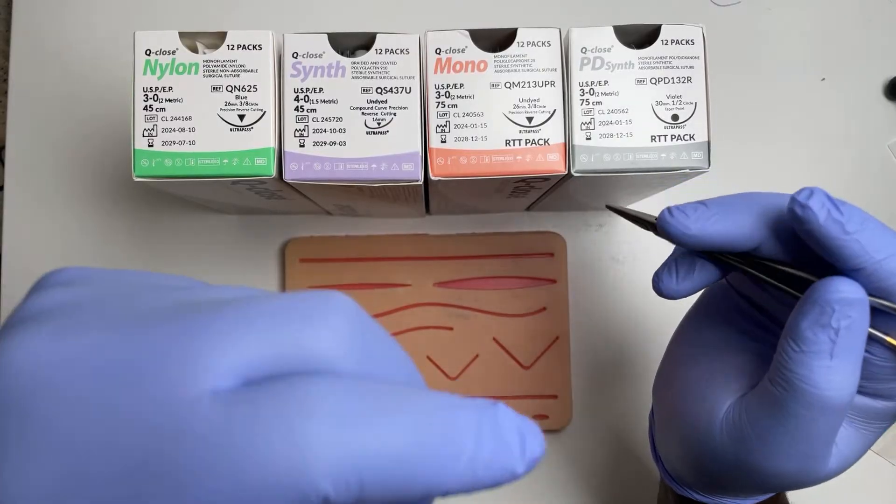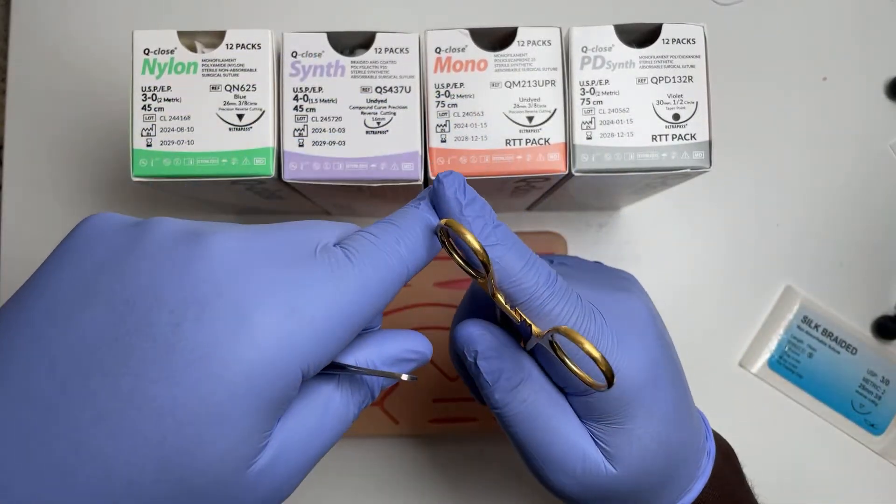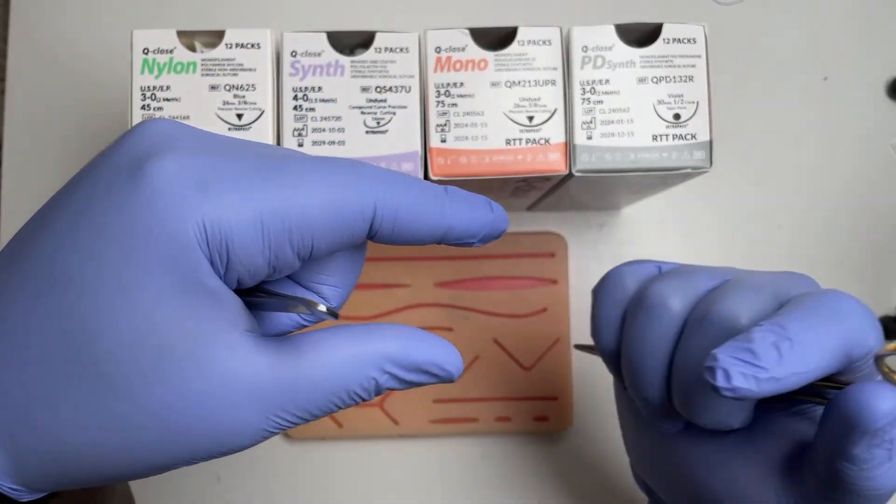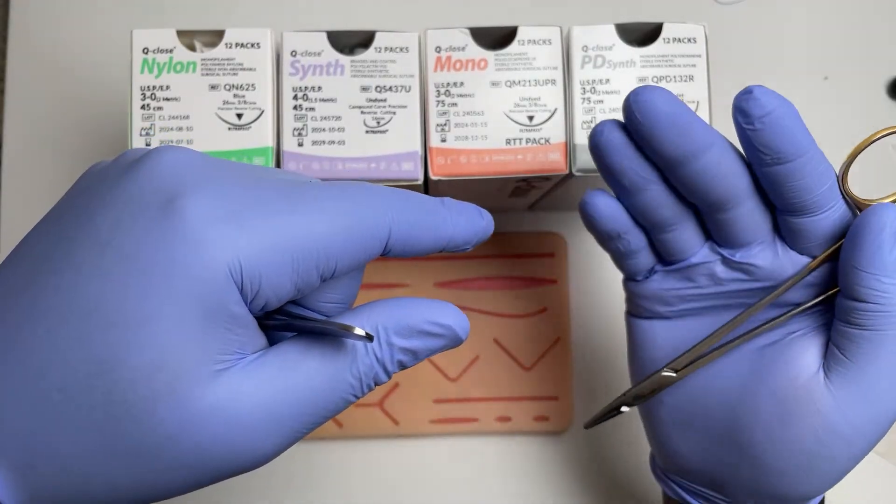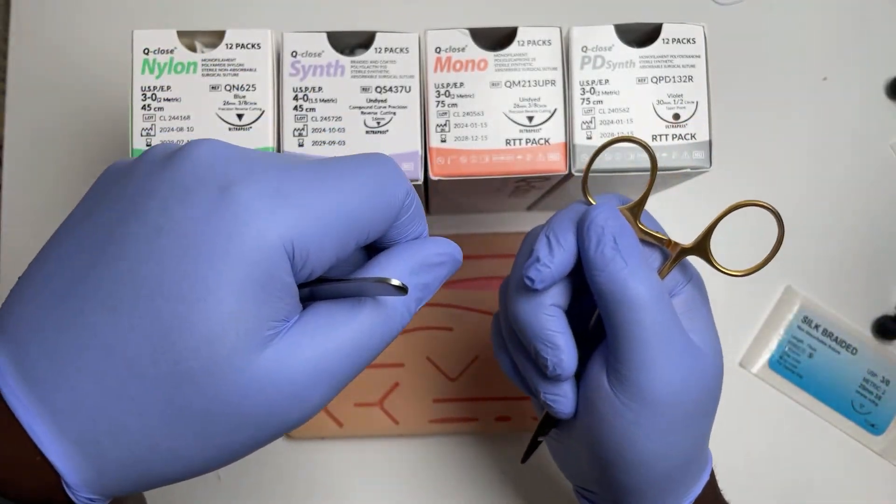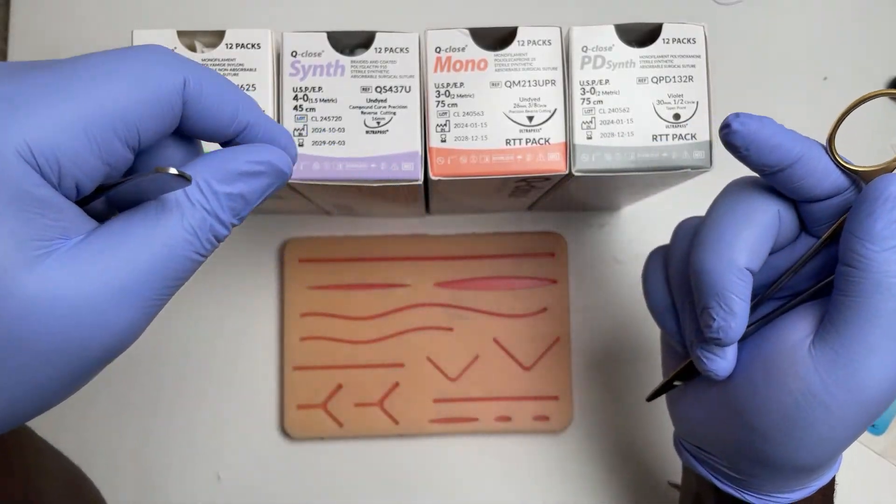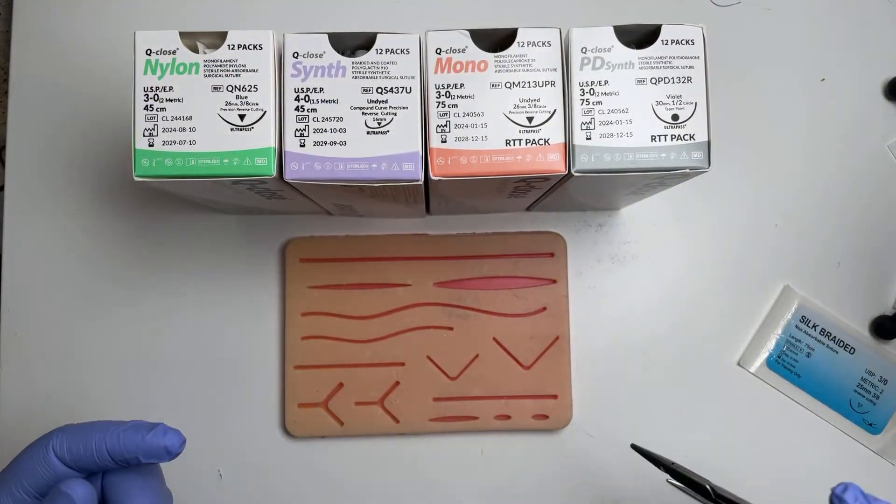When you've got skin, the really elderly or the really young, the dermis is really thin, the second layer. I prefer to use a braided suture because it has better grip, so less likely to rip out and cheese wire through.